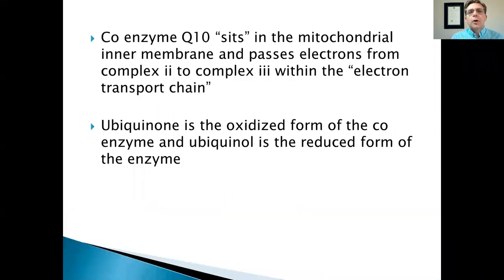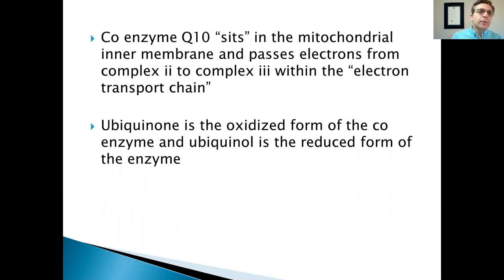First of all, Coenzyme Q10 sits in the mitochondrial inner membrane. There are two barriers — two membranes — to the mitochondria. It sits in the inner membrane and passes electrons from Complex 2 to Complex 3 within the electron transport chain. It's basically part of the energy production apparatus of the cell. I'm going to show you a diagram in a moment.